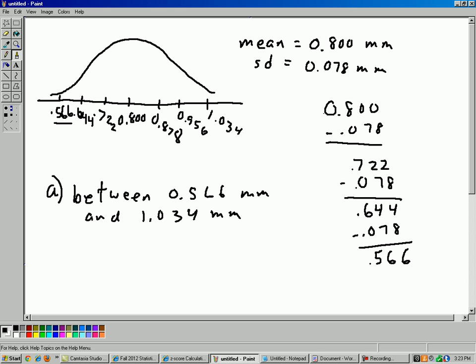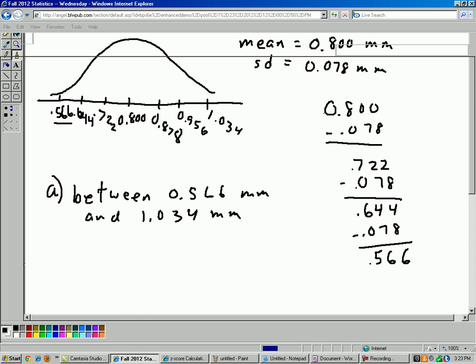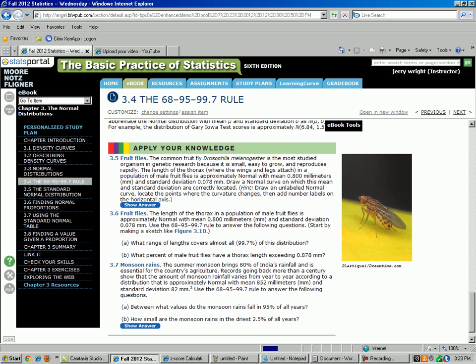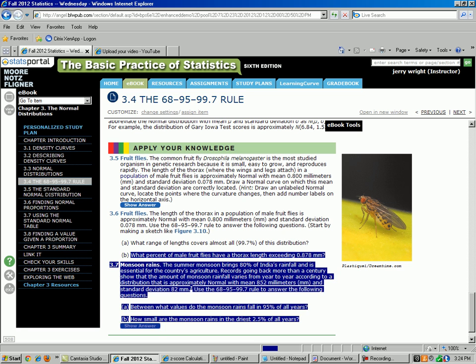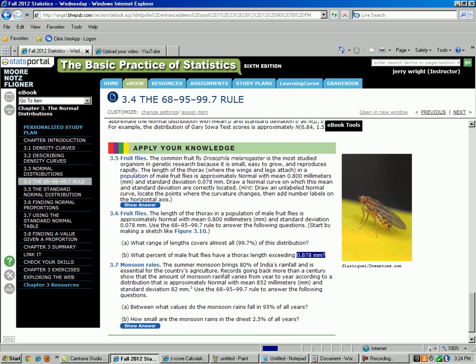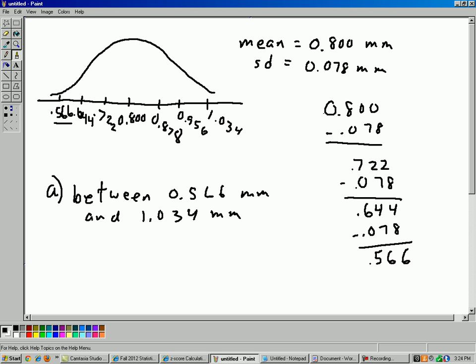Part B. The question for part B, what percent of male fruit flies have a thorax length exceeding 0.878 millimeters? Let's go to our sketch. And here's how the sketch really comes in handy is we can find the 0.878 right there. And that is one, if you look at the sketch, this is the mean right there. The 0.878 is one standard deviation above the mean.